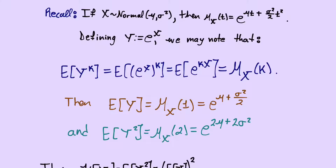To calculate the mean and variance of Y_j, we need the evaluations at k=1 and k=2. When k=1: E[Y] = e^(μ + σ²/2). When k=2: E[Y²] = e^(2μ + 4σ²/2) = e^(2μ + 2σ²).